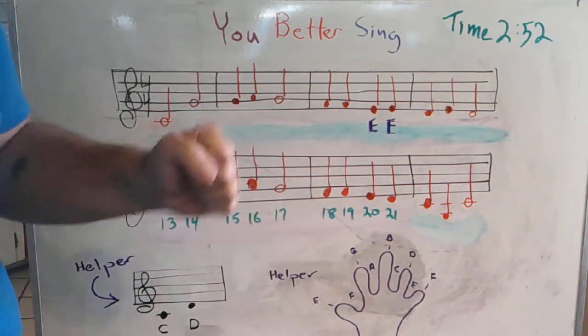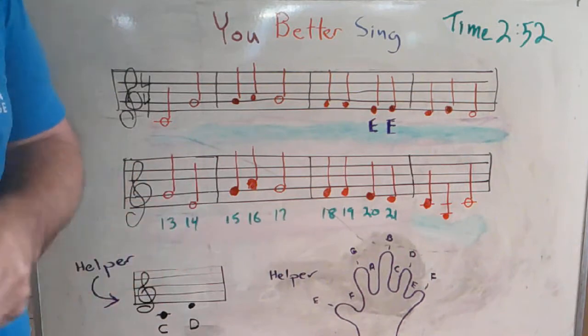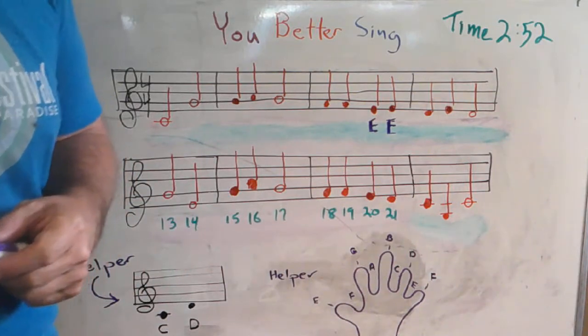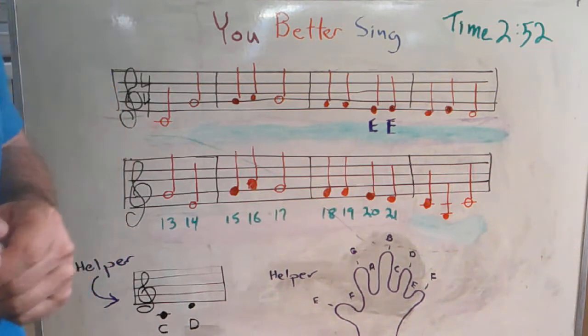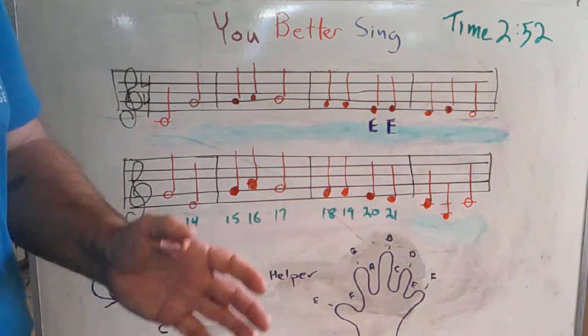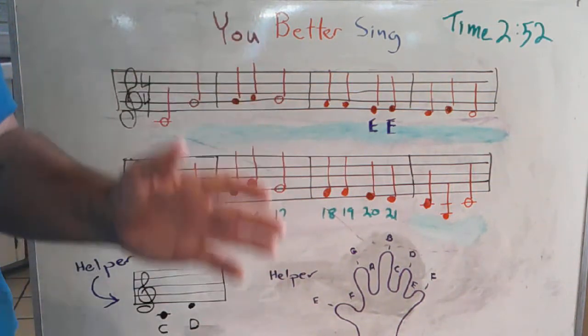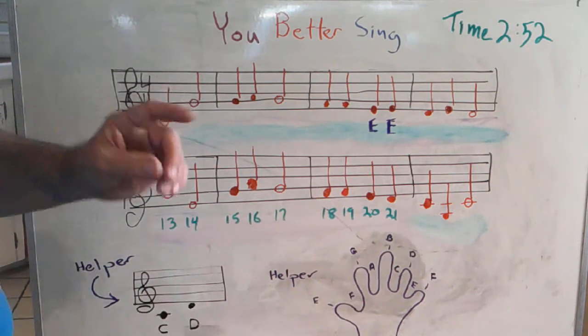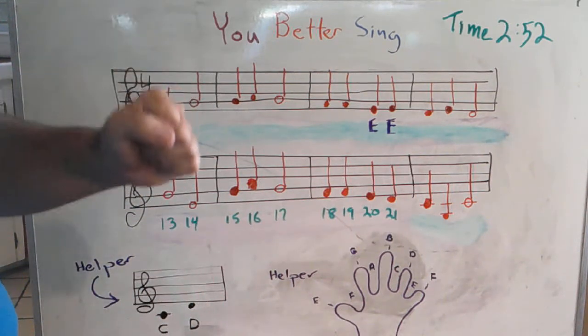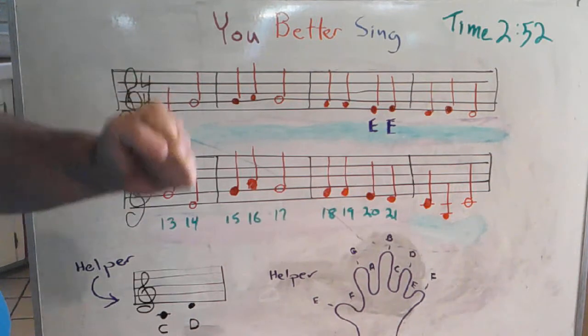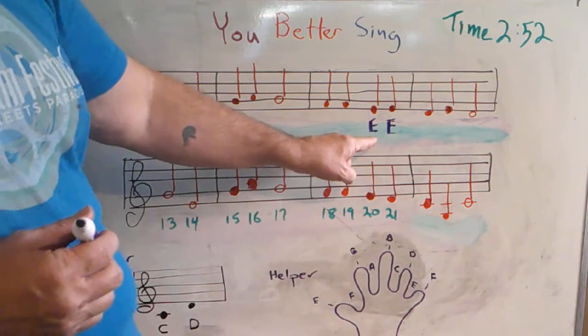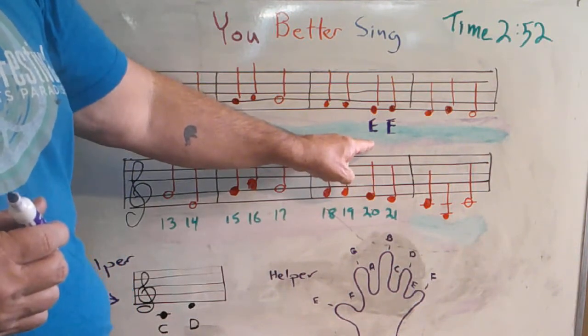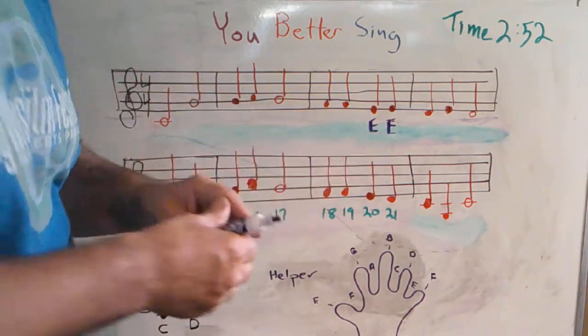The reason we learn sight singing is so we can transpose notes into different keys. Some of you will grow up to be maybe professional musicians. You're gonna have to learn how to transpose music, and that means to play the same melody in a higher key or lower key. The hand signals will help you connect with the intervals.